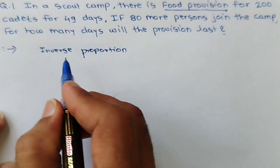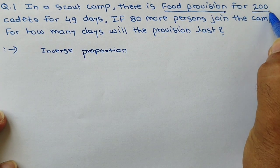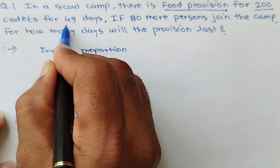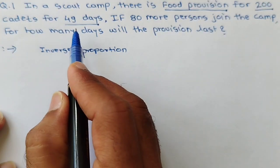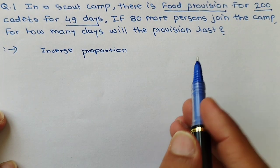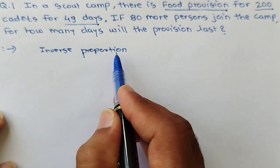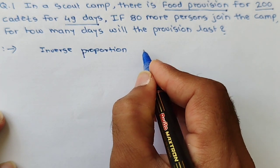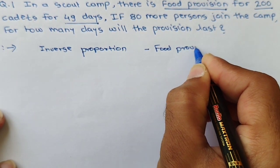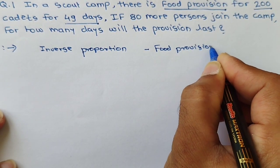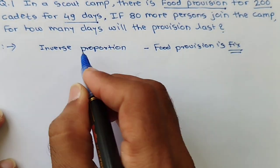The dependent quantities here are number of cadets — 200 — and number of days — 49. These are dependent on each other: if one increases, the other decreases. This is inverse proportion because the full provision is a fixed quantity.